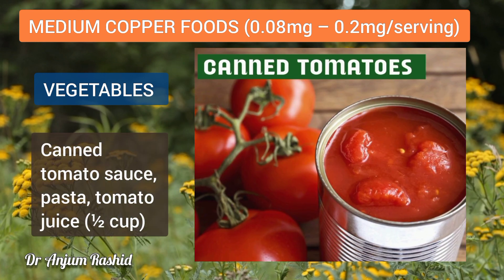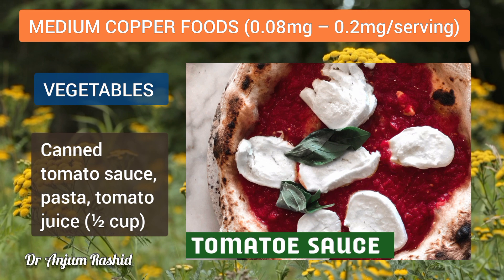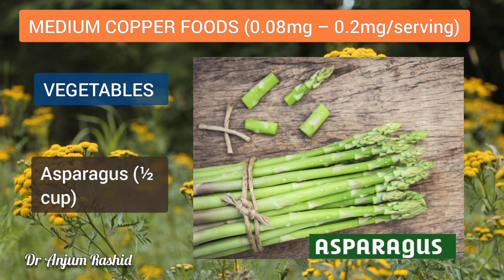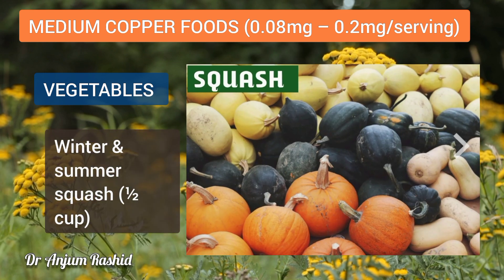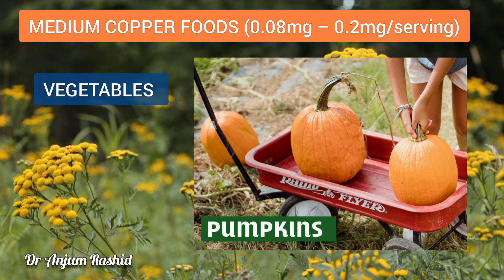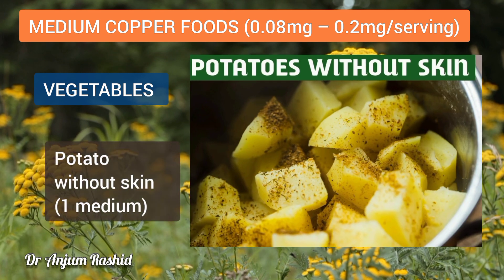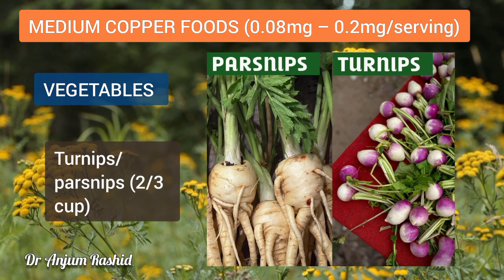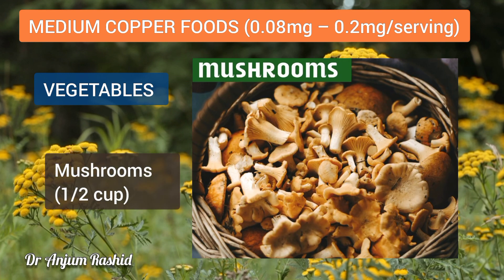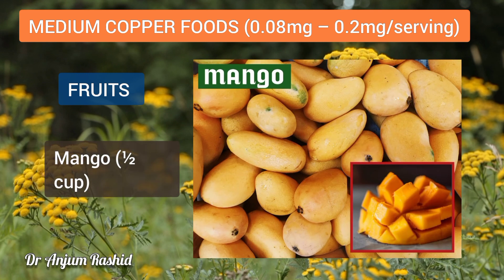More medium copper vegetables: canned tomato products such as tomato sauce, tomato paste, or tomato juice (1 cup), asparagus (1 cup), green peas (1 cup), winter and summer squash (1 cup), pumpkin (¾ cup), potato without skin (1 medium), sauerkraut (1 cup), turnip or parsnips (⅔ cup), and mushrooms (1 cup).